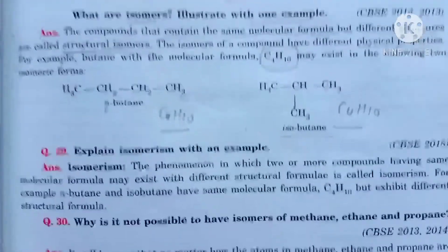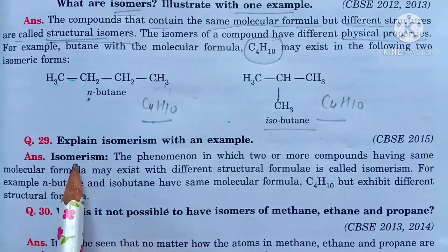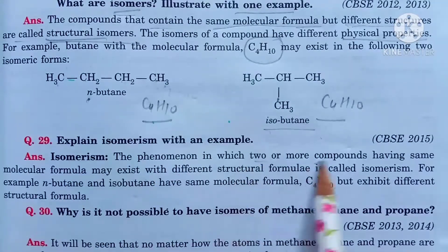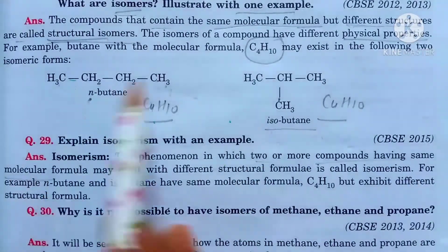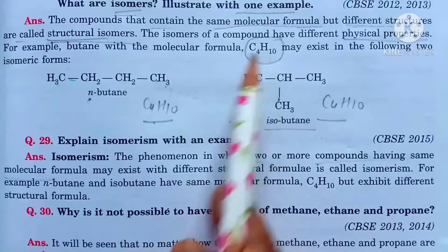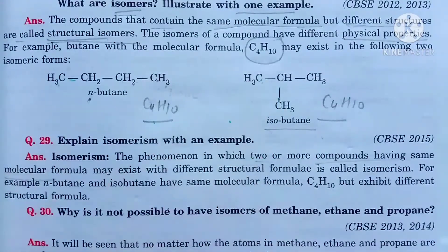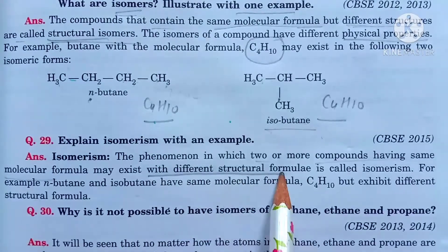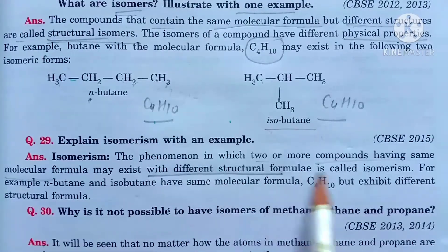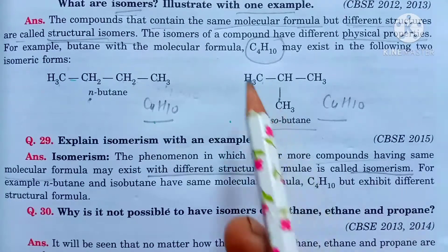This is isomerism — the phenomenon in which two or more compounds have the same molecular formula but different structural formulas. For example, C4H10 can exist as n-butane or isobutane.